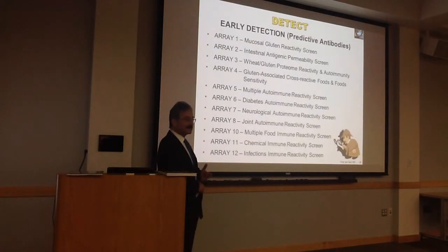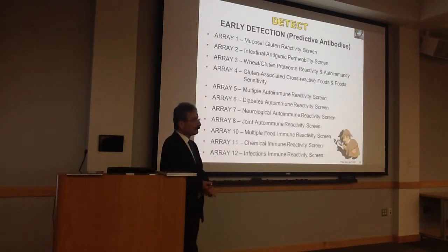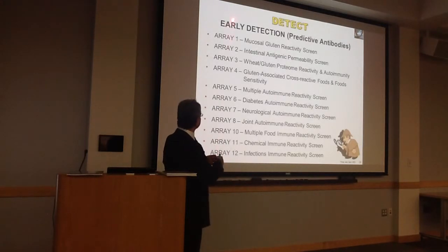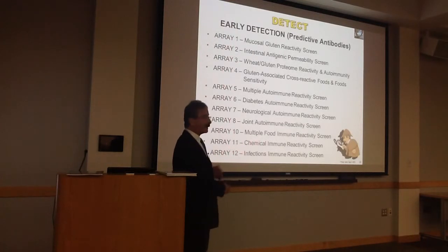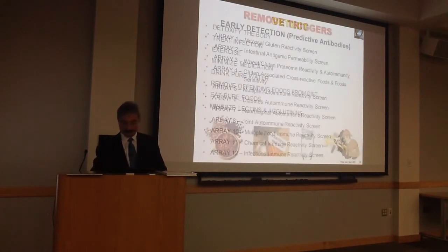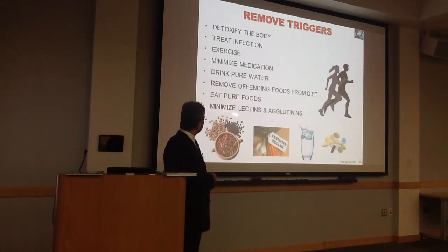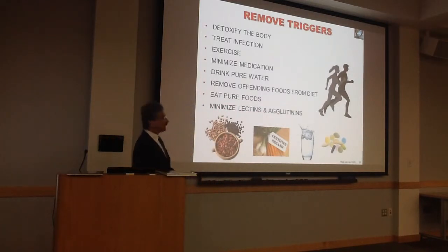In closing, my message is: environmental factors play a significant role in autoimmunity, including dietary components, infection, and toxic categories. First you have to detect — using different biomarkers — and I'm developing tests all the time for Cyrex Laboratories. Then comes remove the triggers: by detoxifying the body, treating the infection, exercise, minimizing medication, drinking pure water, removing offending foods from your diet, eating pure foods, and minimizing lectins and gums. All of that is part of removing the triggers.